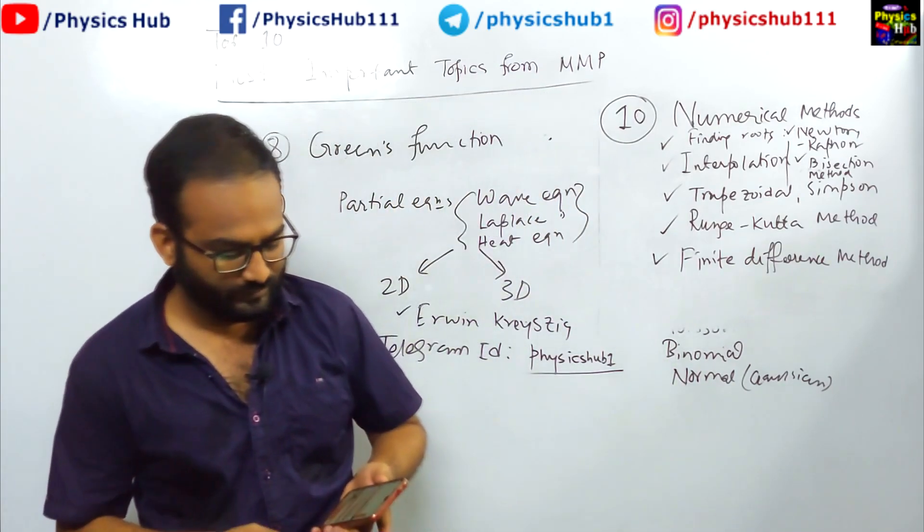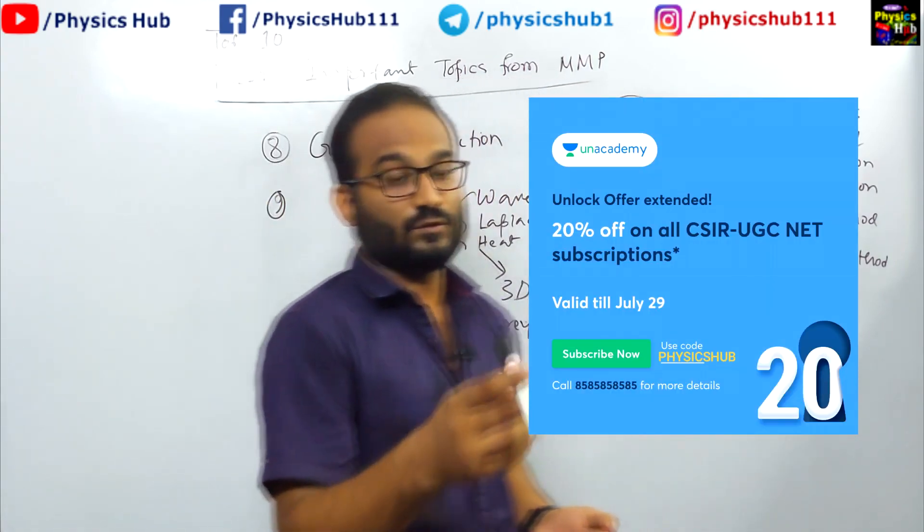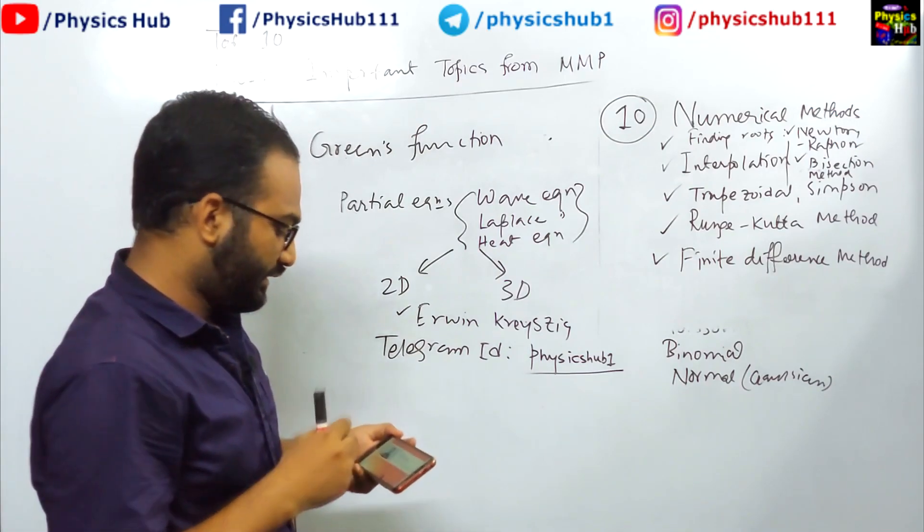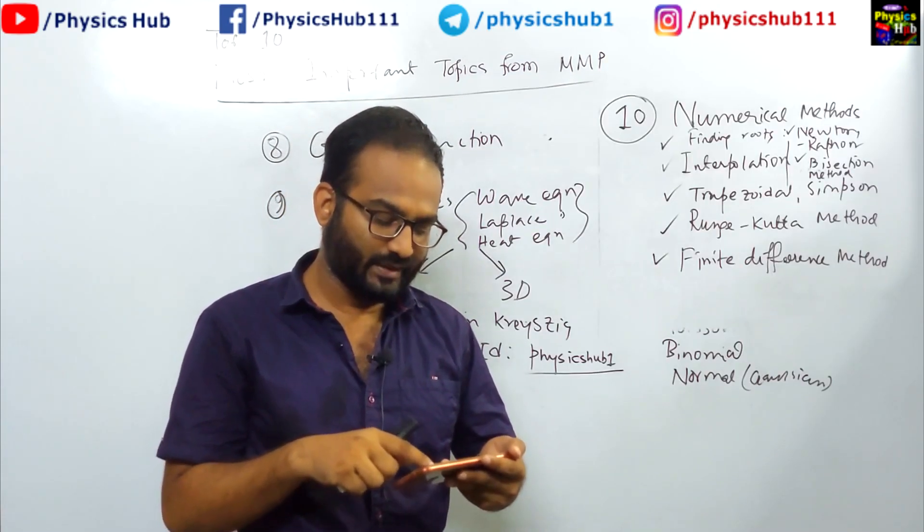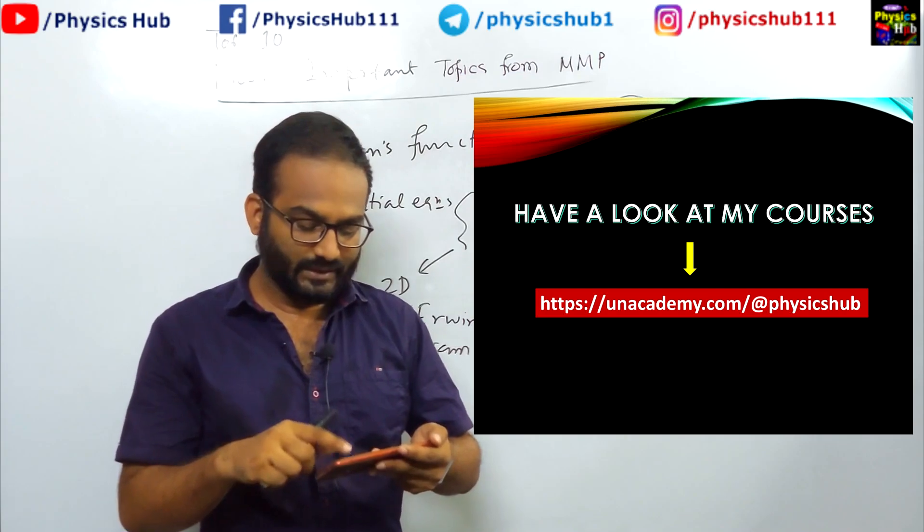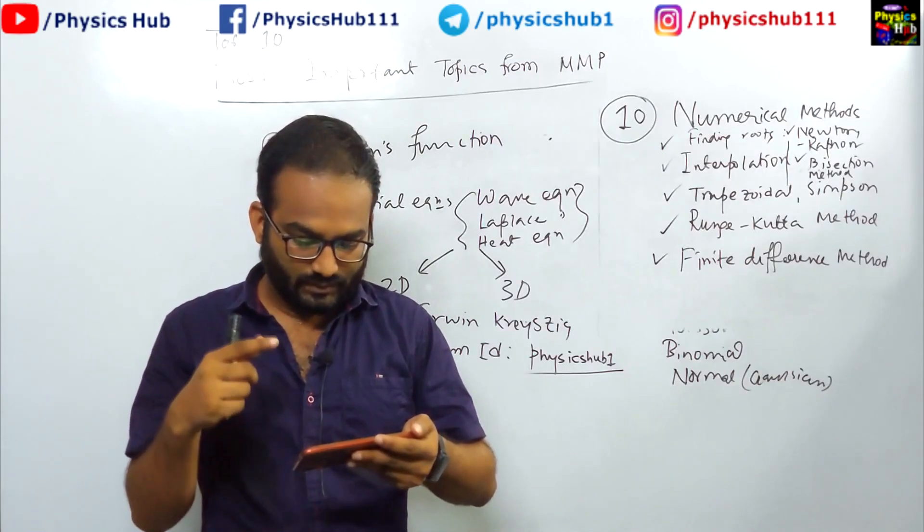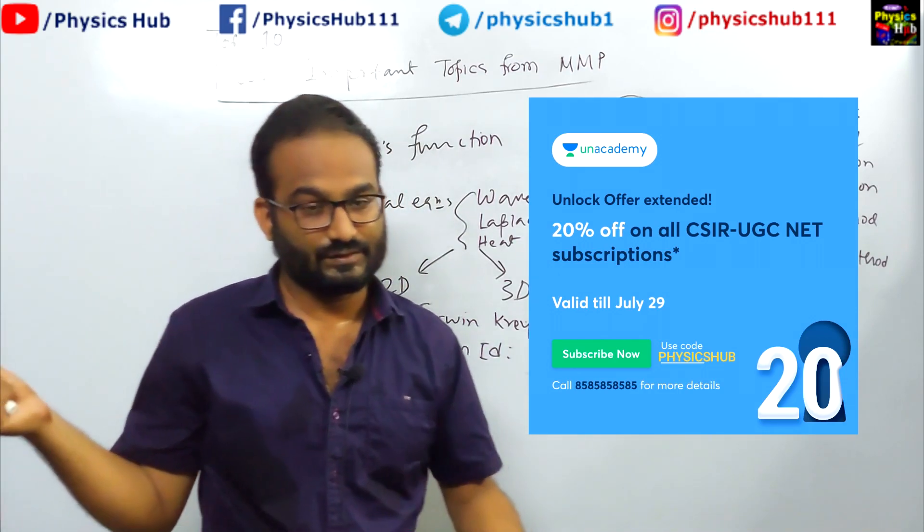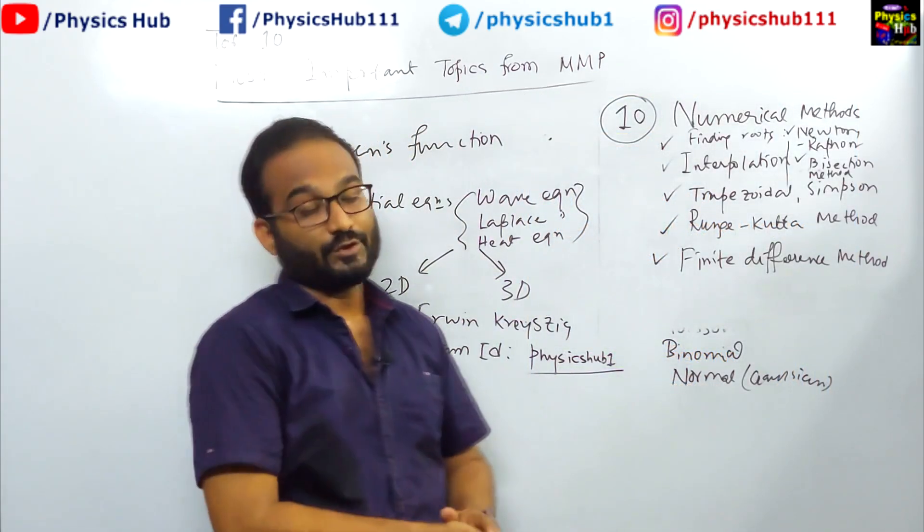Before I end the video, let me tell you, if you want to prepare in short timing, you can join Unacademy Plus. I have courses by visiting the URL unacademy.com slash at the rate physicshub. You will get all the detailed courses, starting from Mathematical Physics to Nuclear Particle. And a special offer is going on. You can use our referral code PHYSICSHUB to get the maximum benefits. So take the subscription and put your feet one step ahead towards reaching your goal.